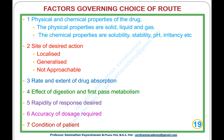Factors Governing Choice of Route: (1) physical and chemical properties of the drug — physical: solid, liquid, gas; chemical: solubility, stability, pH, irritancy; (2) site of desired action — localized, generalized, or not approachable; (3) rate and extent of drug absorption; (4) effect of digestion and first-pass metabolism; (5) rapidity of response desired; (6) accuracy of dosage required; (7) condition of the patient.